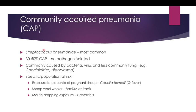Community acquired pneumonia is most commonly caused by Streptococcus pneumoniae, accounting for about 30 to 50 percent of cases. In many cases, no pathogen is isolated, but it is commonly caused by bacteria and viruses, and less commonly fungi — for example, Coccidioides and Histoplasma species.